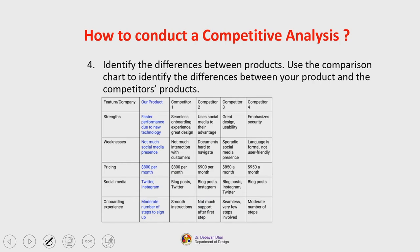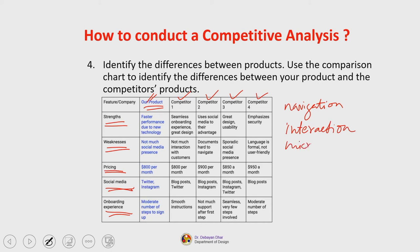Fourth, identify the differences between the products. Use the comparison chart to identify differences between your product and competitors' products. You can list competitor 1, 2, 3, and 4 and then identify their strengths, weaknesses, pricing, social media strategy, onboarding experience, navigation, interaction types, and micro-interaction strategies. Then create a comparative table to understand your competitors with respect to features in a vivid and detailed way.